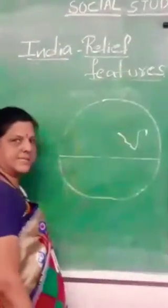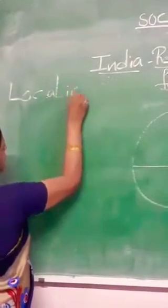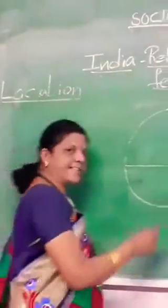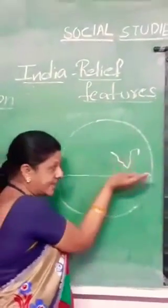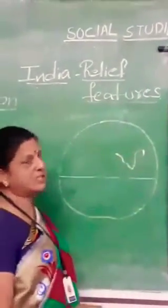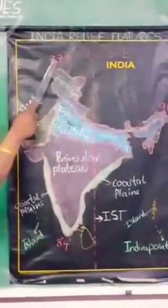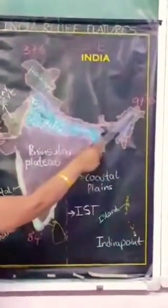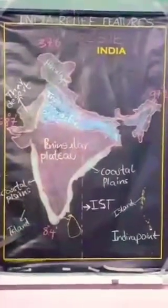Now let us learn about the location of India. The geometrical location of India is 8 degrees 4 minutes to 37 degrees 6 minutes North latitude, and 68 degrees 7 minutes to 97 degrees 25 minutes East longitude. These are called the geometrical location of India.